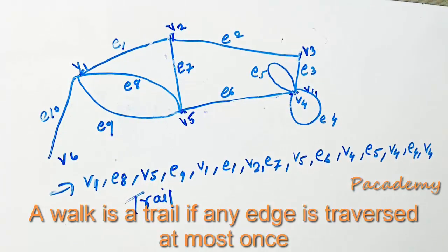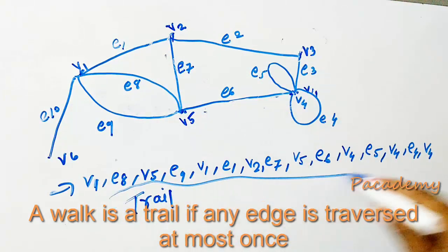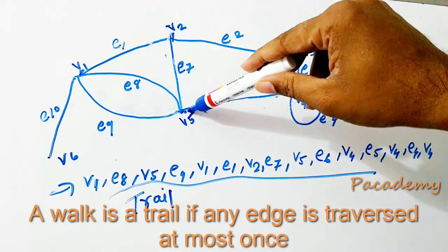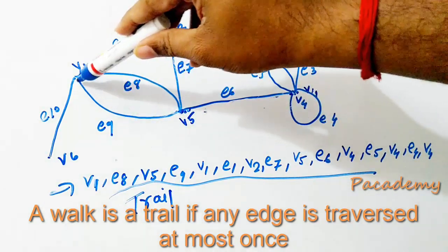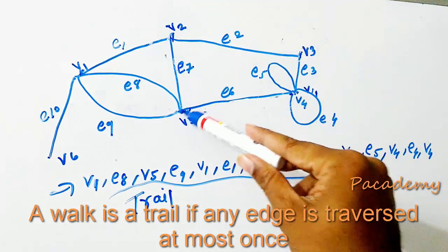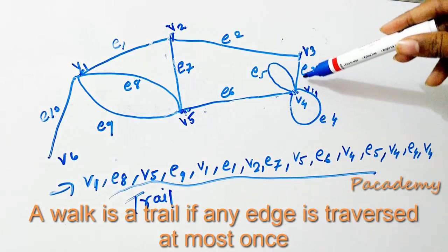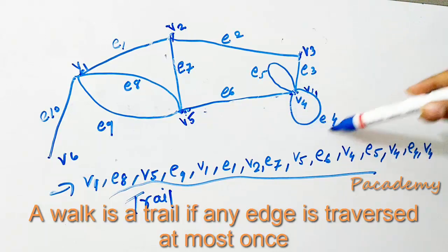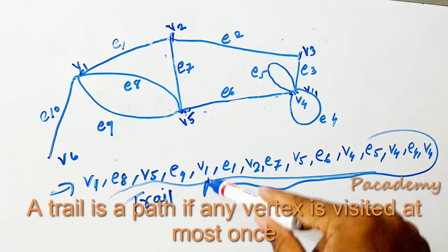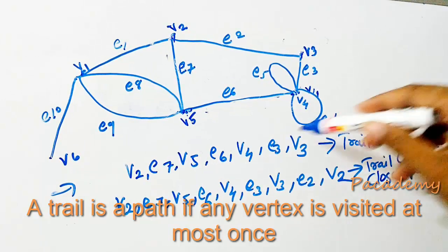A walk is a trail if any of the edges is traversed only one time during the walk. In this example from v1 moving to e8, from v5 to e9, then from v1 to e1, and v2 to e7, then from v5 to e6 to v4 to e5 and from e4 to v4. None of the edges are traversed two times, so this is known as a trail.